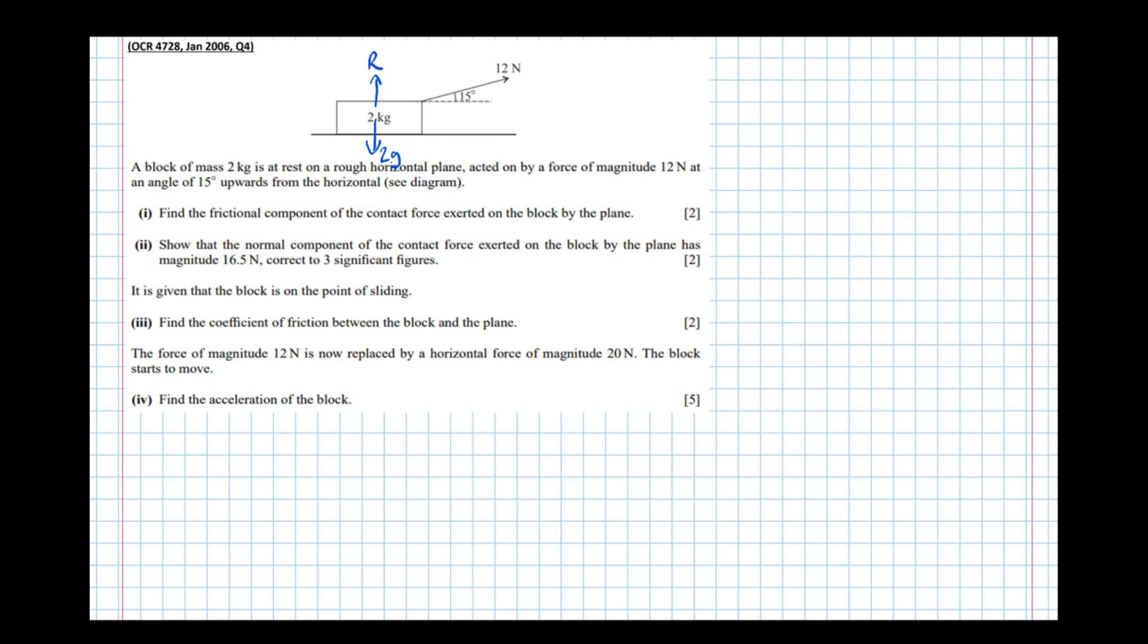Now in this case R doesn't automatically equal 2g as it might have done in previous examples, because this tension here, this 12 Newtons pulling the block up, is bearing some of the load of the weight of the block. So R is going to be somewhat reduced because of the presence of this upward component of the 12 Newtons. So we can't just instantly say that R equals 2g here. We're going to have to resolve in a little while to find out.